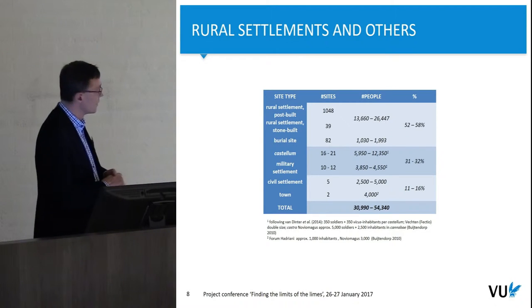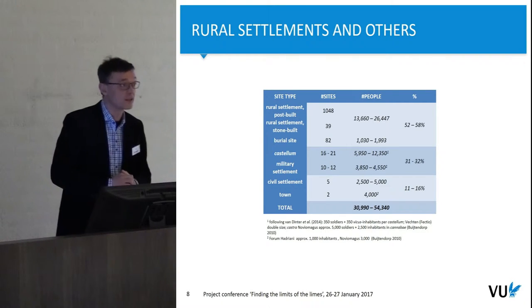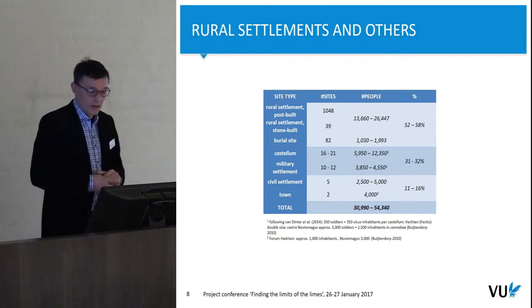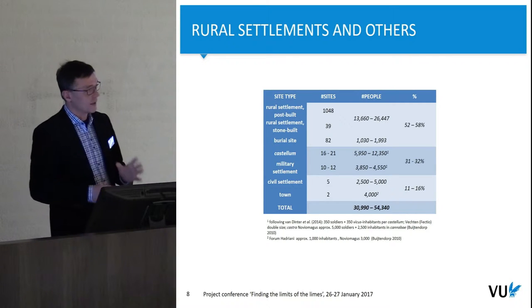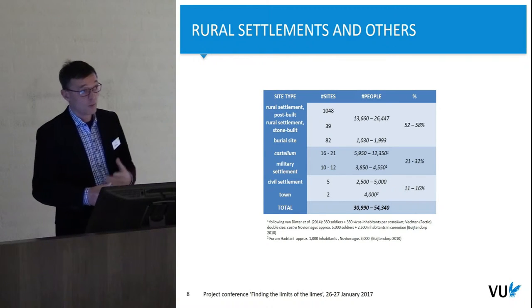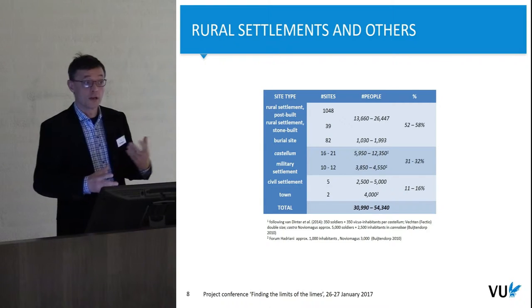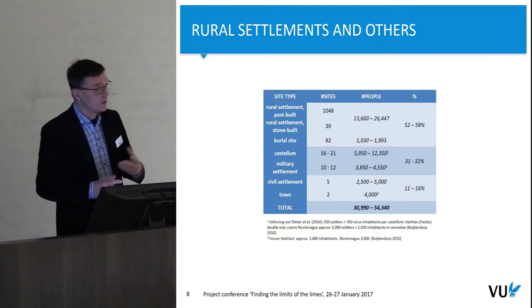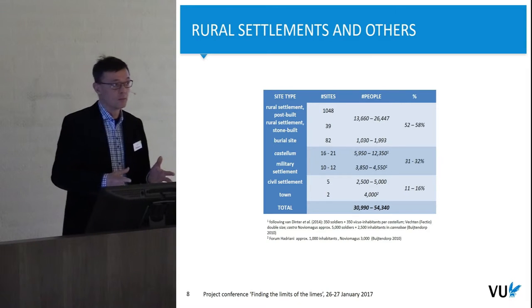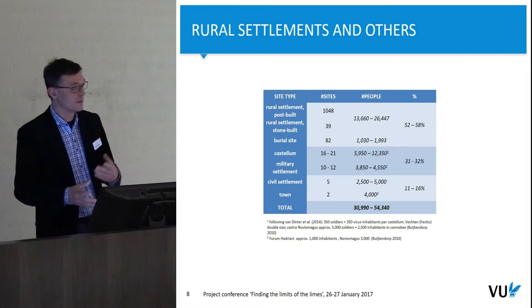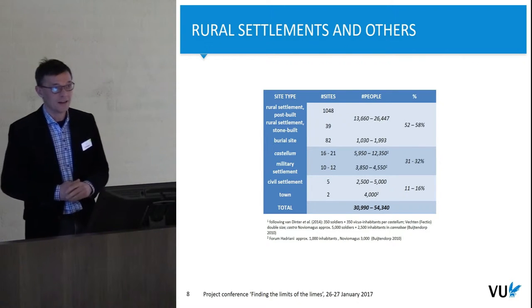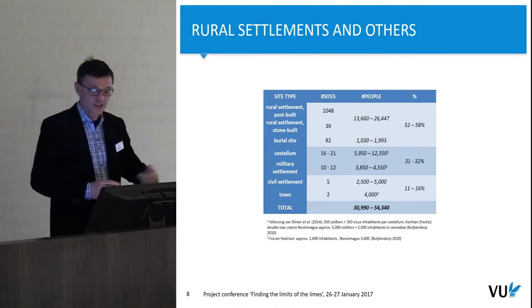This is not the whole story. There's also other data — we have the forts and the military settlements, the vici associated with them. We don't actually know the exact number of forts. We count between 16 and 21, probably closer to 21, and we haven't found all the vici that were supposed to be next to every fort. So I'm being very cautious here not to overestimate the number of people.